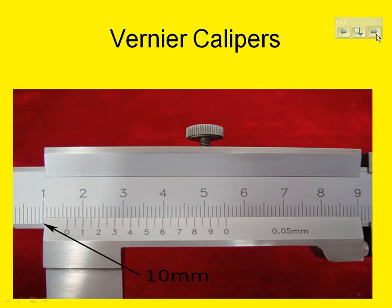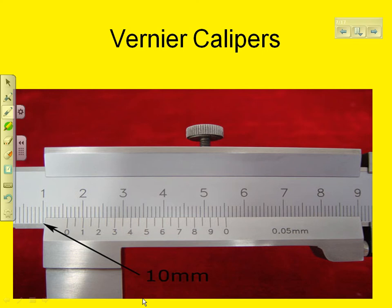Notice that the zero mark is past the one. In this illustration, that represents 10 millimeters. You're looking for the zero mark going past the main number. You could also have read this as one centimeter.